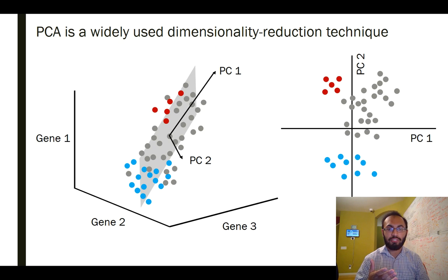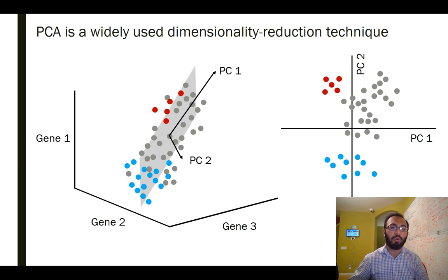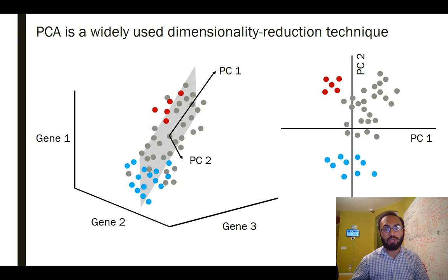Before I talk about contrastive PCA, let me talk about standard PCA. Principal component analysis is a ubiquitous dimensionality reduction technique. It's used to take high dimensional data — in this case I have three dimensions, but usually we're working with hundreds or thousands or hundreds of thousands of dimensions — and project that data down to two or three dimensions, where we can visualize the data much more easily.